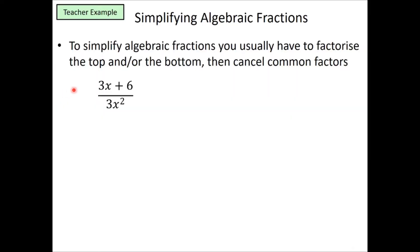In this first example, the first thing we need to understand is we cannot just simply cancel those x's because they're both on the numerator and denominator. You need to have the x term in each term on the numerator to be able to cancel it. So what we need to do is first factorize either the numerator and/or the denominator, and only then we can cancel out the common factors.